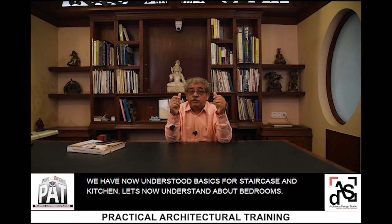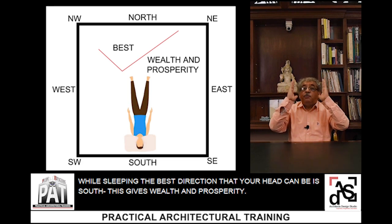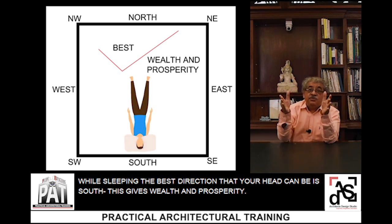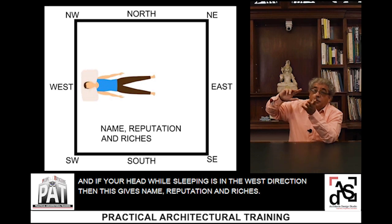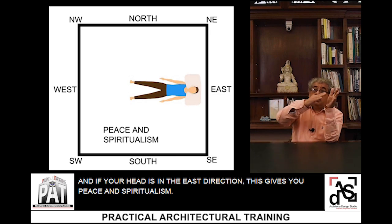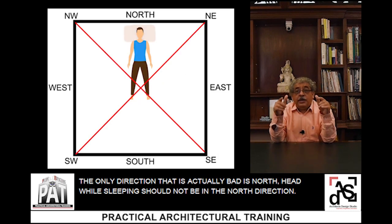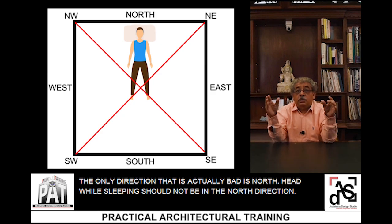Now let us understand about bedrooms. The first and most important thing is the bed position. While sleeping, the best direction for your head is south — this gives wealth and prosperity. If your head while sleeping is in the west direction, this gives name, reputation, and riches. If your head is in the east direction, this gives peace and spiritualism. The only direction that is actually bad is north — your head while sleeping should never be in the north direction.